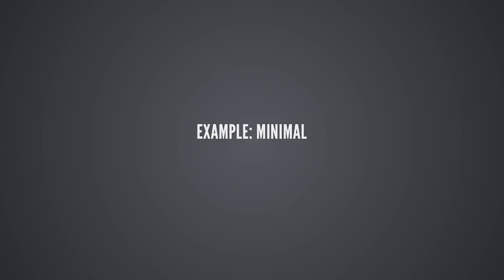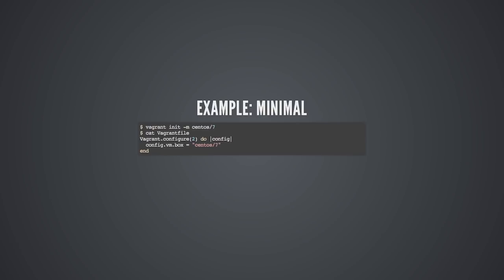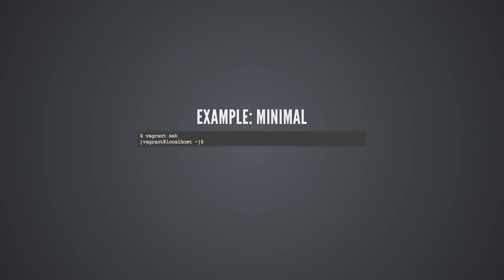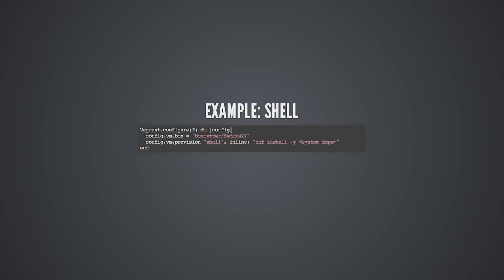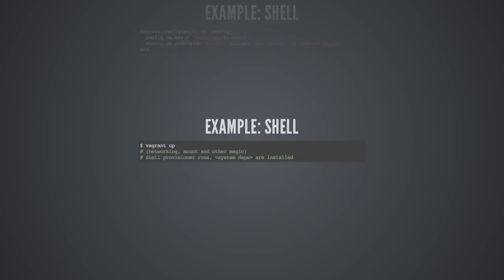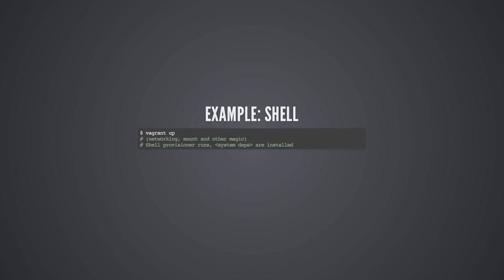Let's see that through some examples. Here's the most minimal example. We're running vagrant init -m with the name of the box - that creates the Vagrantfile we're catting out in the second command. The file says we want to start with a fresh CentOS 7 environment and do no additional configuration. We then boot with vagrant up, which downloads our base box if not cached locally, boots the VM, and does our cross-OS networking and synced folder magic. We connect with vagrant SSH, and we have a shell on our new machine. Second example uses the shell provisioner - we start from a Fedora 22 box and run an inline shell command that installs system dependencies using DNF. We boot with vagrant up, do the same networking and shared directory magic, and run our shell provisioner to install those dependencies.